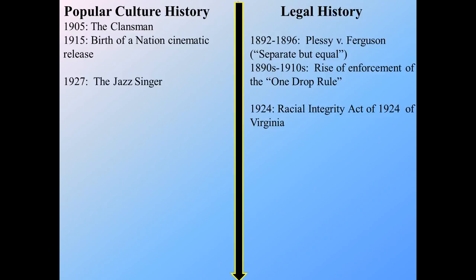By 1927, we have The Jazz Singer, which is the first talking film in the U.S. This too is a film focused on race. It is about a Jewish man who performs in blackface a variety of songs. Even our first talking film is focused on this question of race, and having somebody go on stage and perform in blackface is a very striking image.